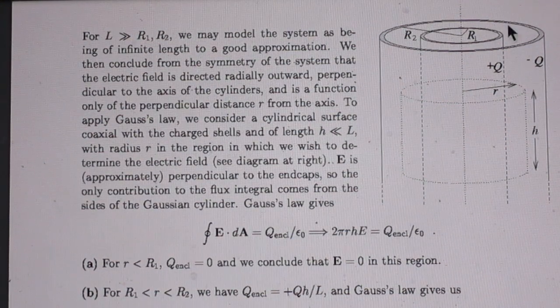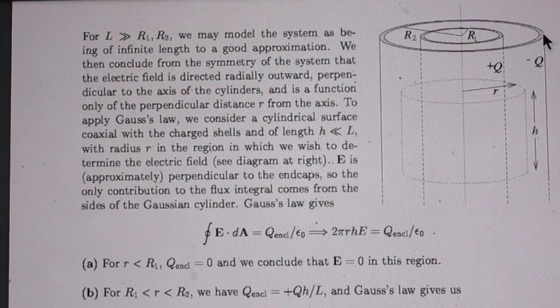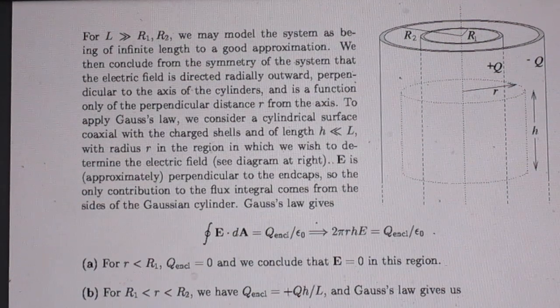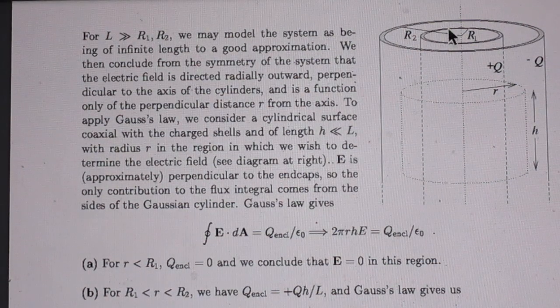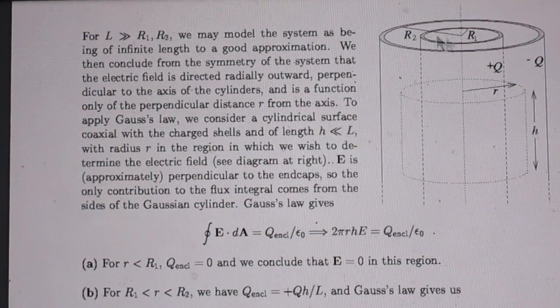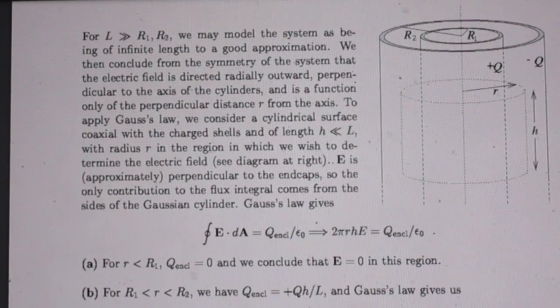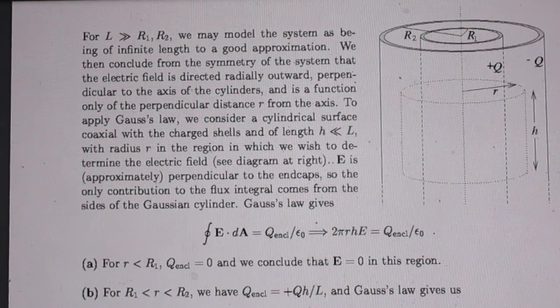Two concentric cylinders, both with length capital L, with radii R1 and radii R2. R1 is here, R2 is here. And L is much much larger than R1 and much much larger than R2.